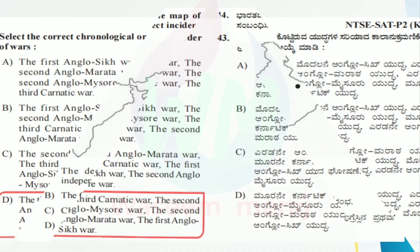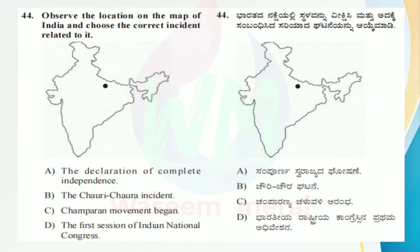Now let's go to question number 44. Observe the location on the map of India and choose the correct incident related to it. Here a black dot is given on the Indian map. Option A: the declaration of complete independence. Option B: the Chowri Chowra incident. Option C: Champaran movement began. Option D: the first session of Indian National Congress.